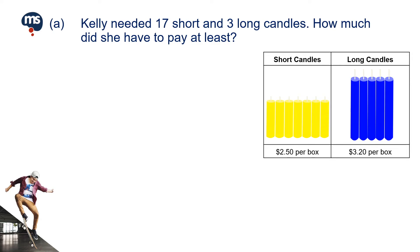Part A. 17 divided by 7 is equal to 2 remainder 3. To have 17 short candles, and since each box contains 7 short candles, the minimum number of boxes of short candles needed is 3.